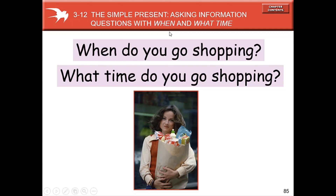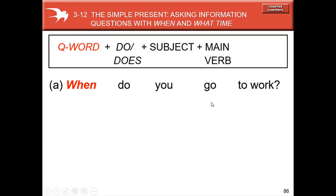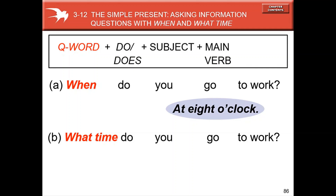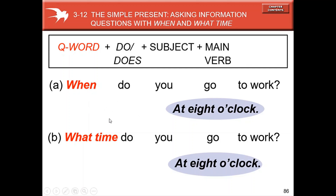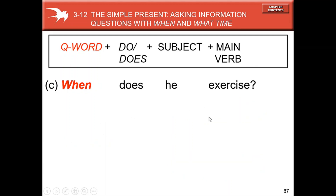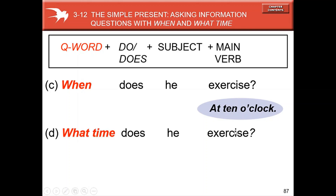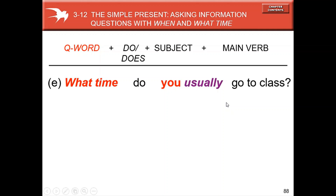Now we use 'when' and 'what time' to ask for information. 'When do you go shopping?' or 'What time do you go shopping?' 'When do you go to work? At eight o'clock.' 'What time do you go to work? At eight o'clock.' When asking about frequency with the question, place the frequency adverb between the subject and the verb. 'When does he exercise? At eight o'clock.' 'What time does he exercise? At ten o'clock.'